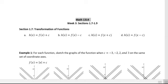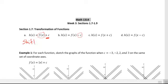We use these transformations of functions. The definitions are: if you're adding a number to a function, it's going to cause your graph to move upward. Anytime you're adding something to the function, the graph is going to move up. If you're subtracting something, then the graph is going to move down. So adding shifts upward, and subtracting shifts downward.